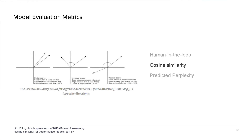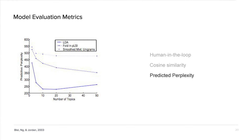Another evaluation method is cosine similarity — calculating the similarity between different documents by computing the intra- and inter-distance between vector space. It assumes topics are spread evenly. A third metric is predicted perplexity, which is algebraically equivalent to the inverse of the geometric mean per-word likelihood. A lower perplexity score indicates better generalization performance. This is a way some people choose their number of topics when they can't decide how many to split their corpus into — it's a good visualization to help with that.